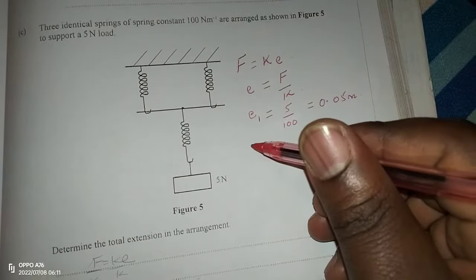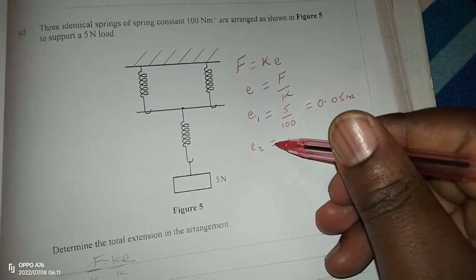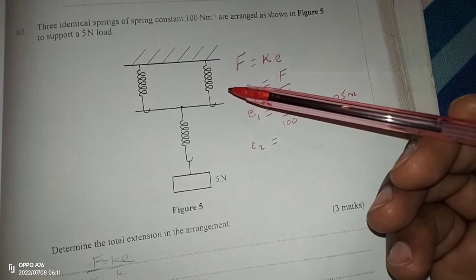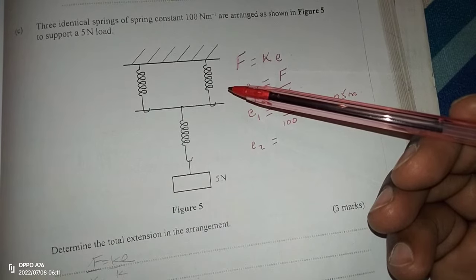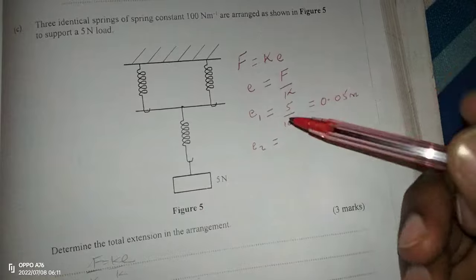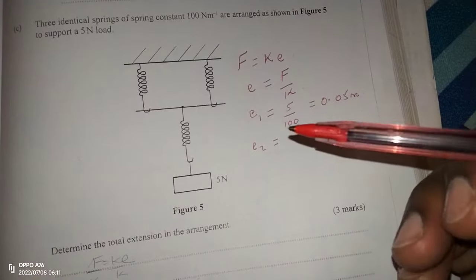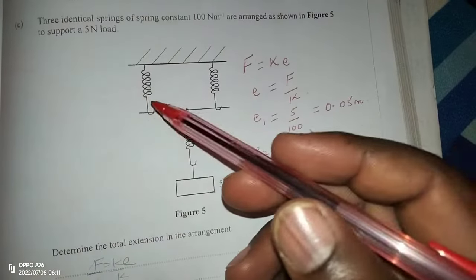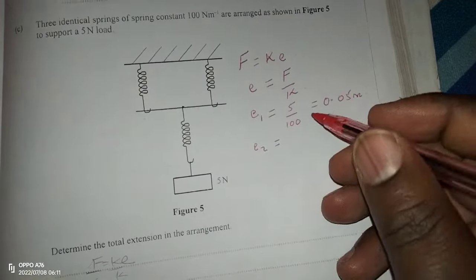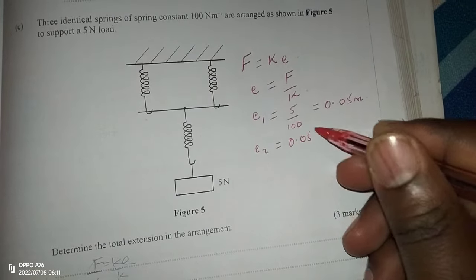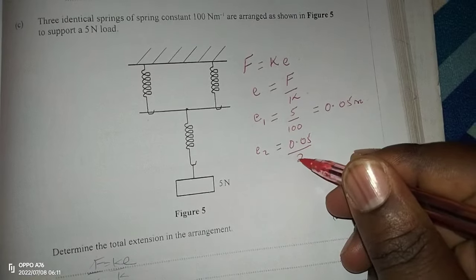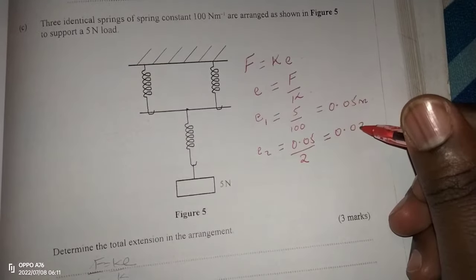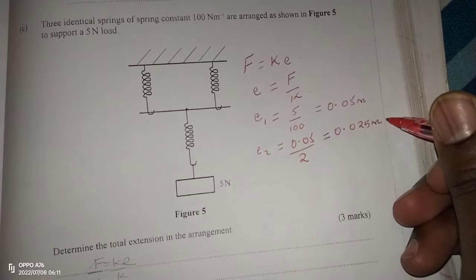In the second case, we have a second extension, whereby each spring would have an extension of 0.05. But because they are two springs in parallel, they are going to share this extension. Therefore, extension 2 is shared between two springs, giving 0.05 shared by two springs.